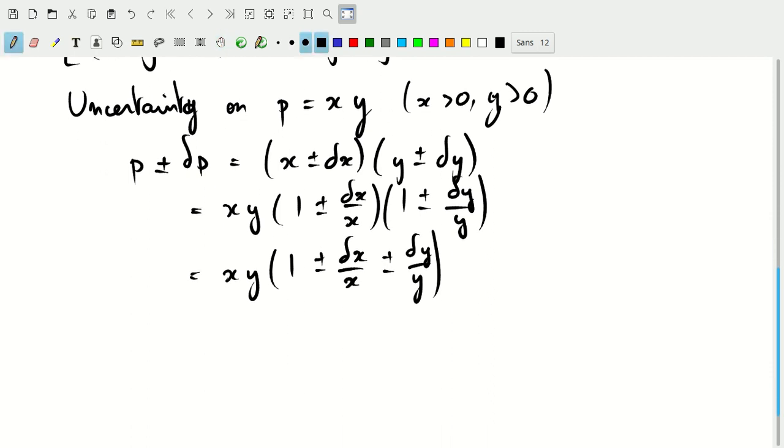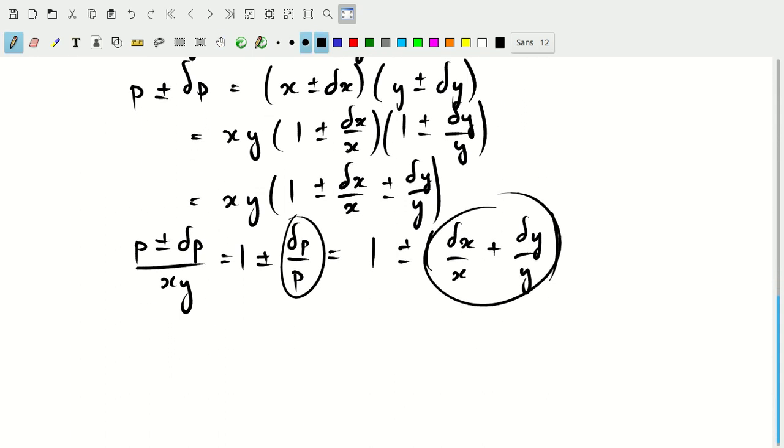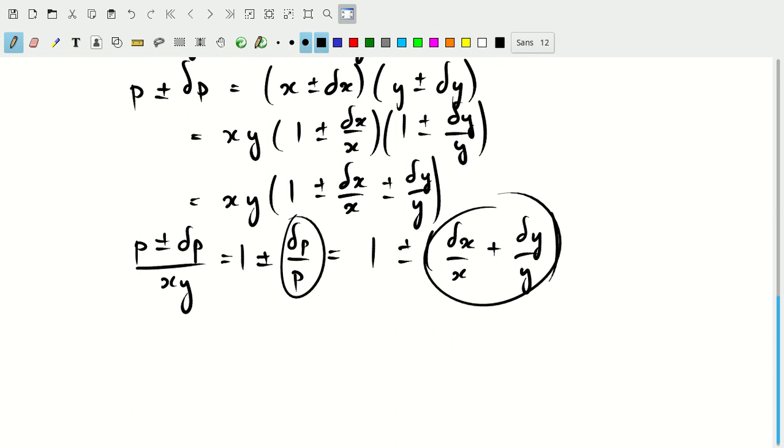This gives us one plus or minus the relative uncertainty dp over p, which equals one plus or minus dx over x plus dy over y. What you'll see now is that the relative uncertainty on the product is related to the sum of the relative uncertainties on the individual factors.